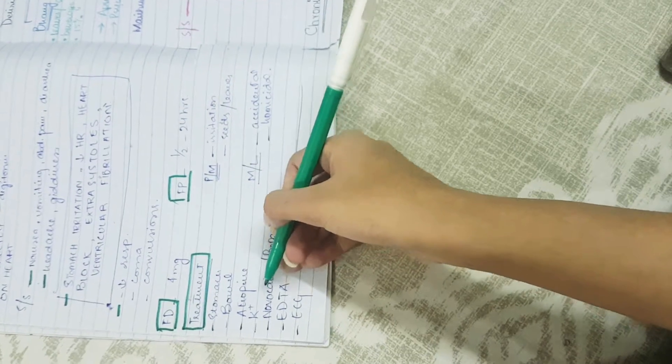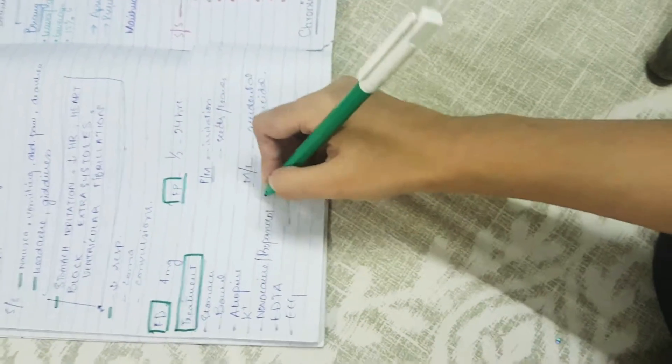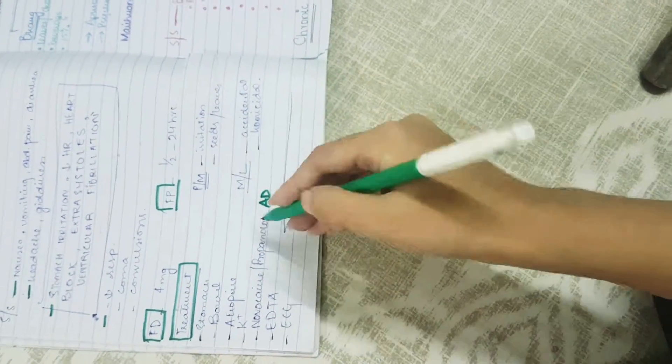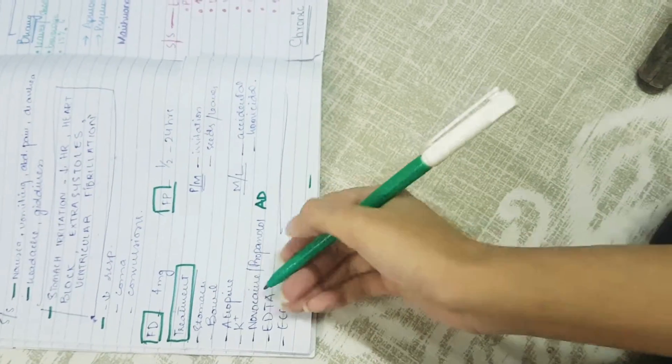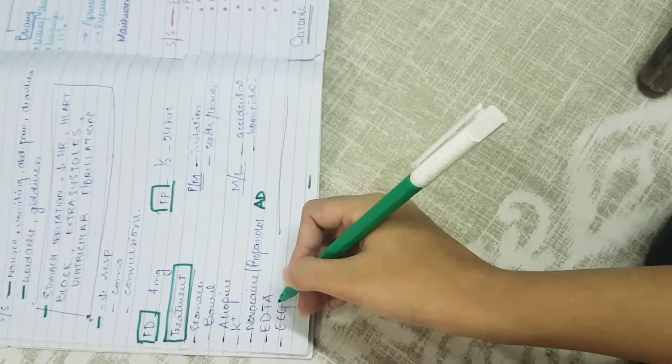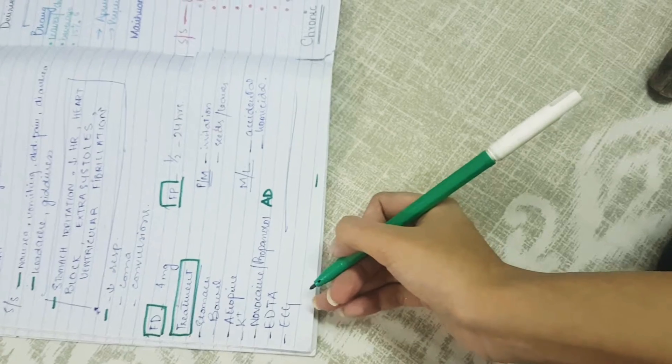You can also give potassium supplements. The main antidotes are propranolol and novocaine. You can also give EDTA and must monitor ECG.